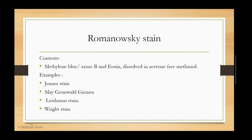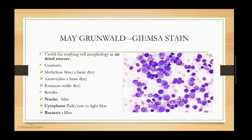Romanowski stain contains methylene blue or Azure B and Eosin dissolved in acetone-free methanol. Examples include Giemsa, May-Grünwald, Leishman, and Wright stains. May-Grünwald Giemsa stain is useful for studying cell morphology in air-dried smears. It contains methylene blue (a basic dye), Azure B (also a basic dye), and Eosin (an acidic dye). This stain colors nuclei blue, cytoplasm pink to light blue, and bacteria blue.